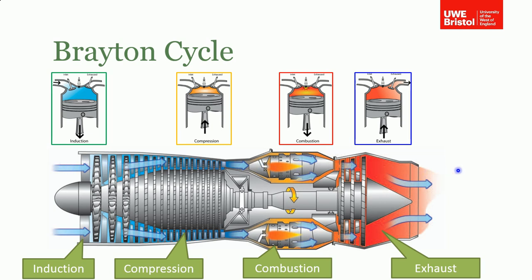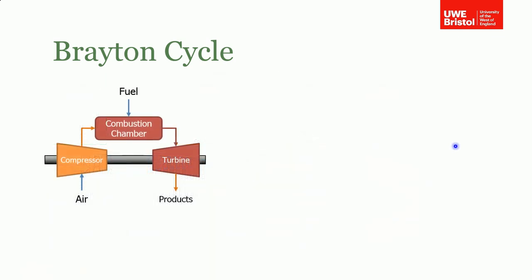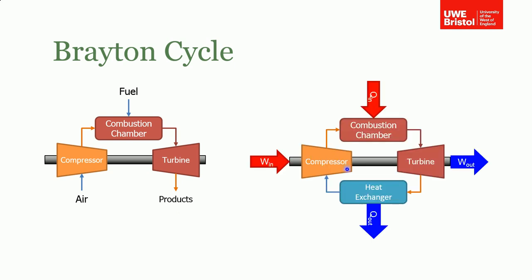Schematically, we're bringing air into the compressor, combusting it, and exhausting products. But this doesn't give us a cycle — it's not closed. We had the same problem with the reciprocating engines for the diesel and Otto cycles, where we used an air-standard assumption because we were just inducting air and exhausting products.